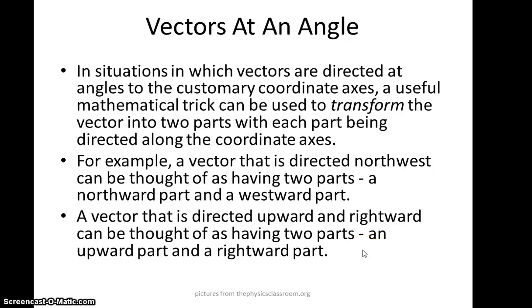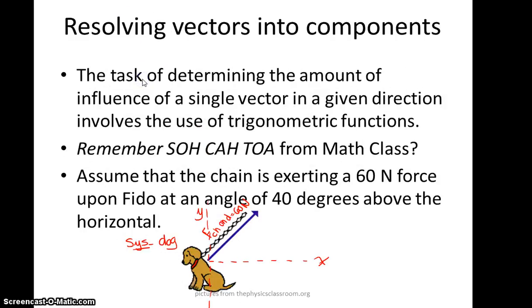When we have vectors at an angle, we're going to try and use all of the math that we've learned in school so far to transform that vector into its x and y parts. So we're interested in finding out the magnitude of the x component and the magnitude of the y component. So for example, if you have a vector that's directed northwest, we know that there's going to be a westward component and a northward component. We can kind of break that down.